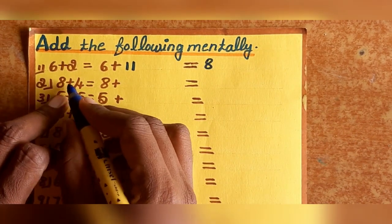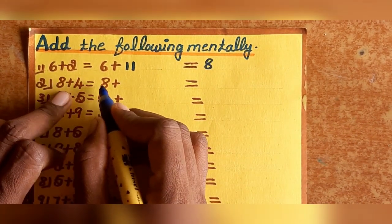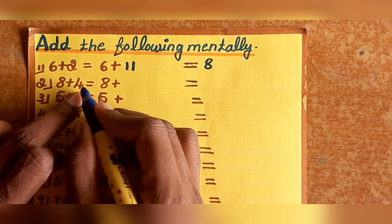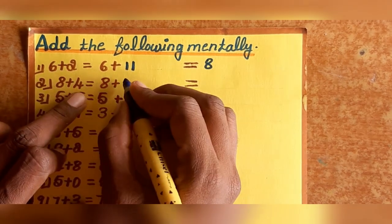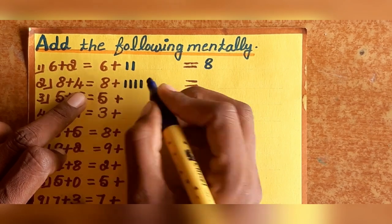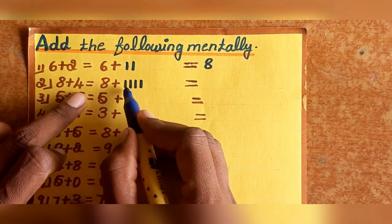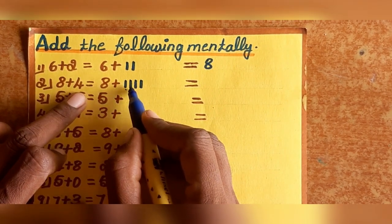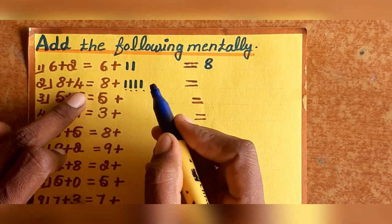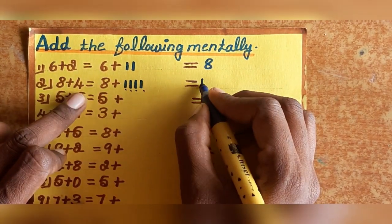Example 4: 8 plus 4. Keep 8 in your mind and tally 4. Count 4 numbers: 9, 10, 11, 12. So 8 plus 4 equals 12.